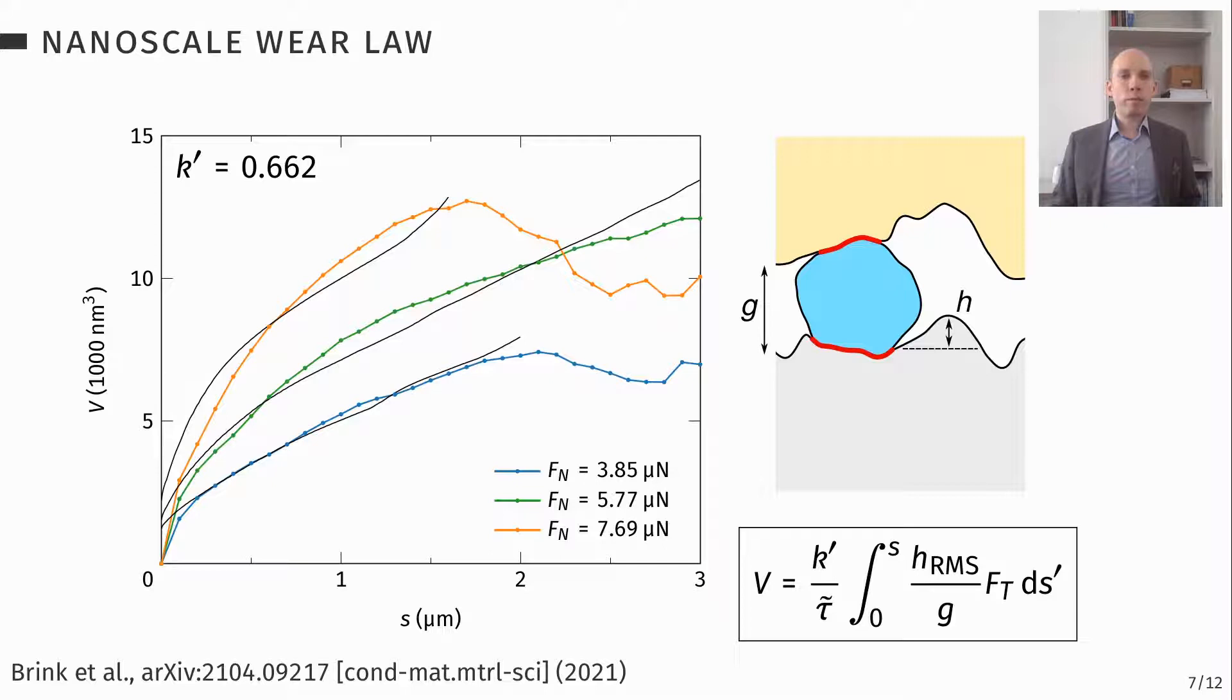And the k prime is quite close to unity. What it means that it's quite close to unity is that you're not really missing any big parameters in your formula, which is very nice. So we can really relate all of this behavior to the surface roughness.